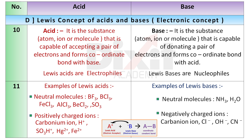According to Lewis concept, the base is a substance — atom, ion, or molecule — that is capable of donating a pair of electrons and forms a coordinate bond with an acid. Lewis bases are nucleophiles. Examples of Lewis bases: Neutral molecules like ammonia and water act as Lewis bases. Negatively charged ions like carbanion, Cl- ion, OH- ion, CN- ion etc. act as Lewis bases.